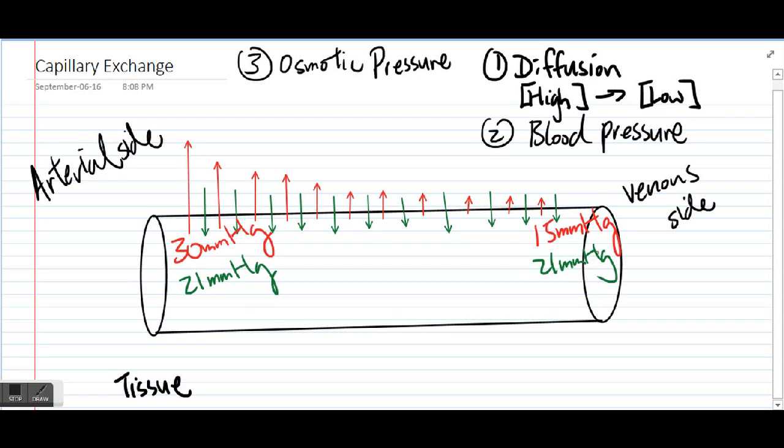So just to recap quickly, blood pressure is always going to be causing fluids to leave the capillaries. However, osmotic pressure is always going to be causing fluids to be drawn into the blood vessels. So if you're thinking blood pressure is essentially doing the opposite thing as osmotic pressure, you would be right.